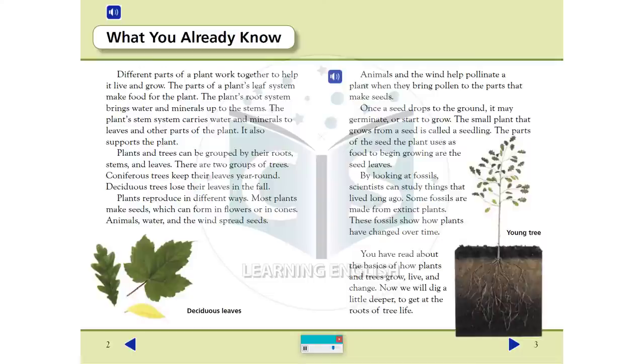Plants reproduce in different ways. Most plants make seeds, which can form in flowers or in cones. Animals and the wind help pollinate a plant when they bring pollen to the parts that make seeds. Once a seed drops to the ground, it may germinate or start to grow.